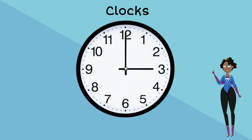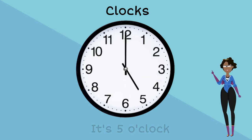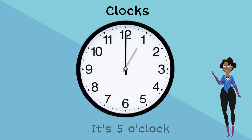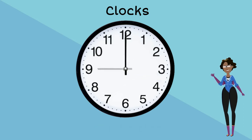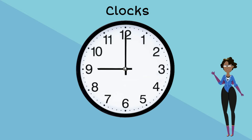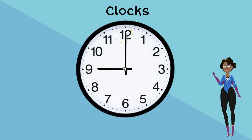Here are some examples. If the short hand is pointing to 5, then it's 5 o'clock. If the little hand is pointing to 1, then it's 1 o'clock. If the short hand is pointing to 9, what time is it? Did you guess 9 o'clock? Because that's correct. But did you notice anything else? When the short hand is on a number, the long hand must be on 12 at the same time for it to be that exact time.